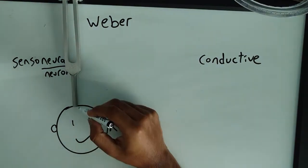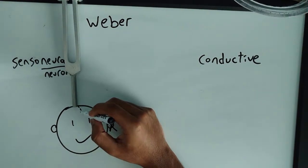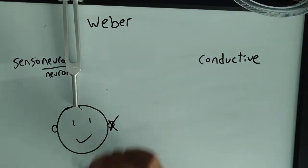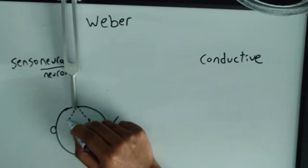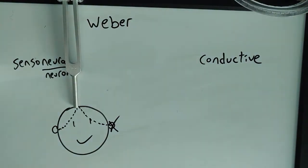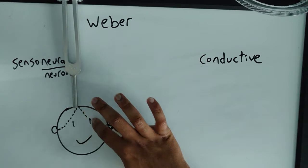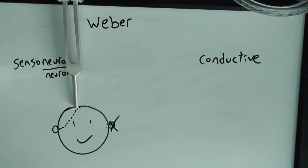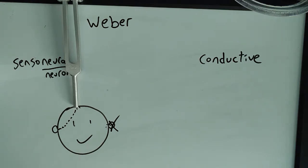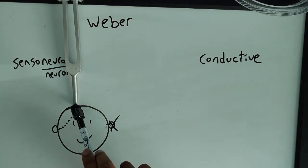For sensorineural hearing loss, pretend there's a neuron that comes right where you put the tuning fork. If a person comes in with left-sided hearing loss, the neuron going to the left ear is not working. So when you do the tuning fork on top of their head, they can only feel it on their right ear. For sensorineural hearing loss, it lateralizes to the unaffected ear — the good ear. You don't feel it in the bad ear.